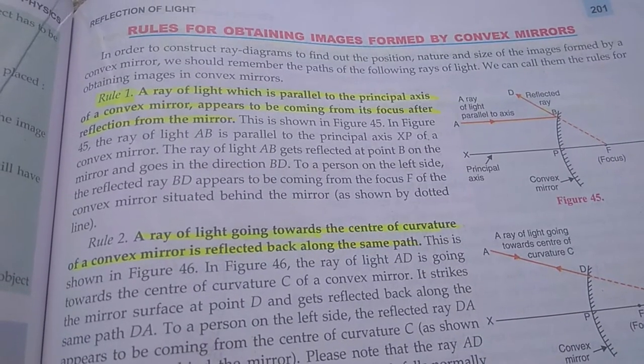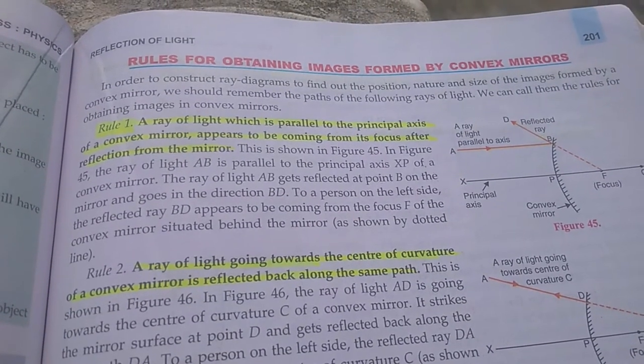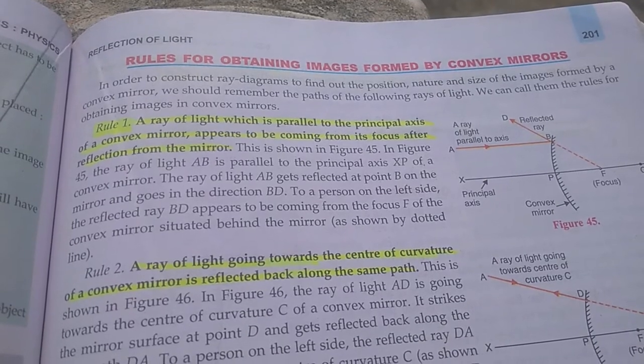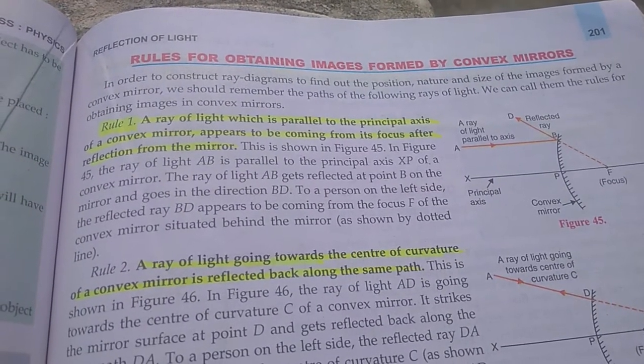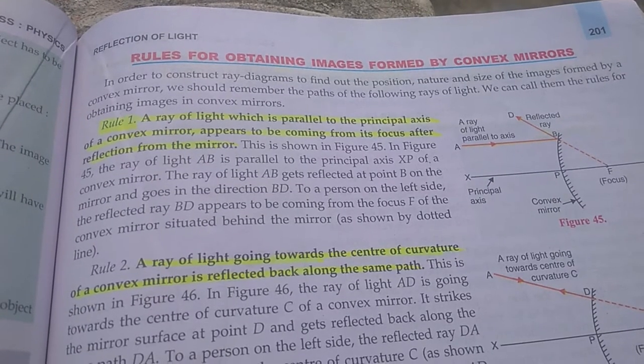Good morning to everyone. Today we are going to discuss the rules for obtaining images formed by convex mirrors. There are total four rules which govern the formation of the image by a convex mirror.